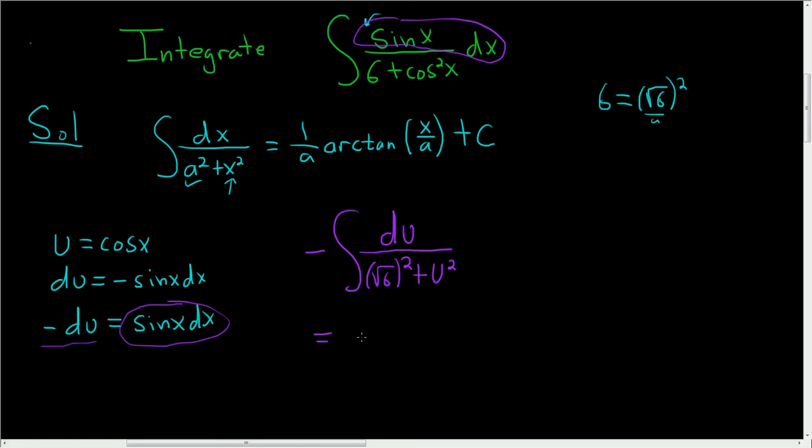And now we can use the formula. This is negative, well, 1 over a, so 1 over the square root of 6. And then we have arc tan of u divided by the square root of 6, plus our constant.